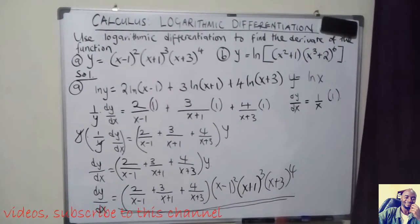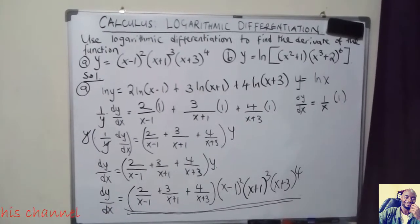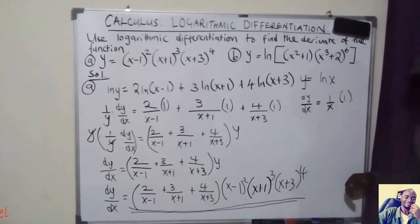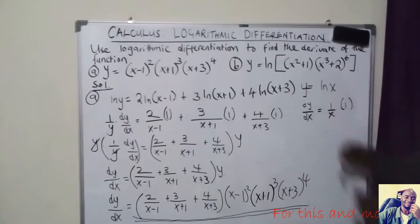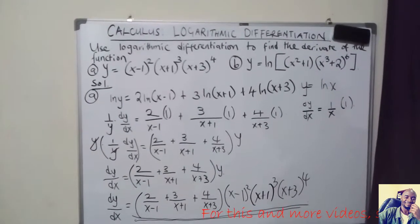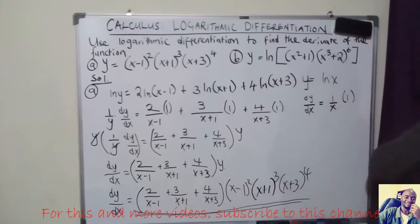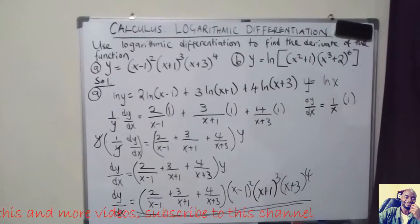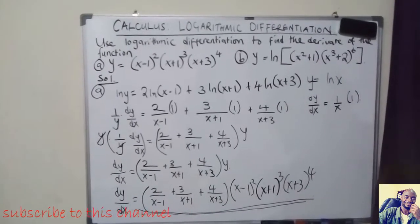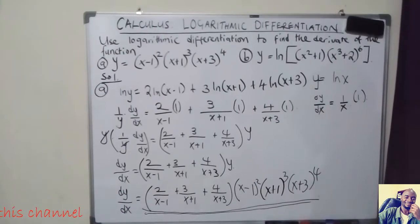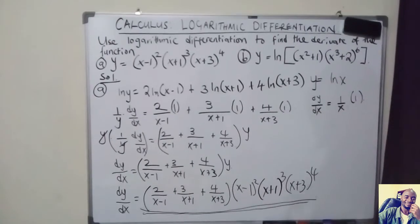So this is how you do logarithmic differentiation: introduce natural logarithms on both sides, use the three laws of logarithms to simplify, differentiate both sides, and replace y with the original function. Always remember when using natural logarithms for differentiation to apply those three laws reviewed at the start. Subscribe to my YouTube channel for more videos — I've left question B for your practice and will do it in the next video. Thank you for watching.